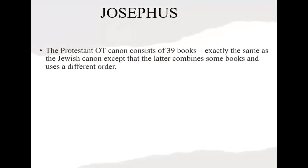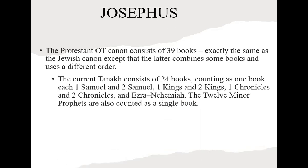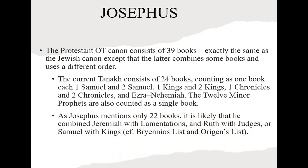You find writings from that time speaking of either 24 or 22 books in the Jewish Bible — the different count is just because they grouped them differently, not because they had a different set of books. Today the current Jewish Tanakh consists of 24 books, which are exactly the same as our 39 books — some are grouped together in slightly different order, but the content is identical. For example, they group all the minor prophets as one book.